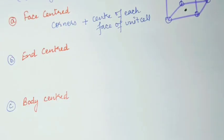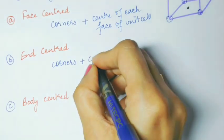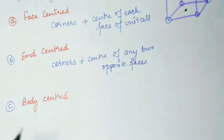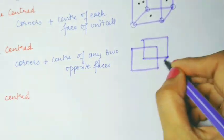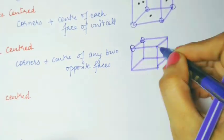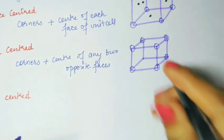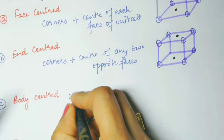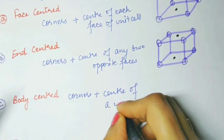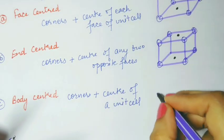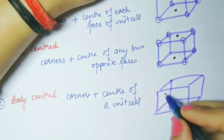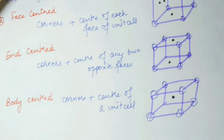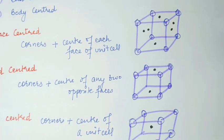The end-centered unit cell has atoms at the corners and at the center of any two opposite faces. These are the two opposite faces, so these are the end centers of the unit cell. Next, the body-centered unit cell has atoms at the corners plus one atom at the center of the unit cell. So face-centered, end-centered, and body-centered are the three types of non-primitive unit cells.